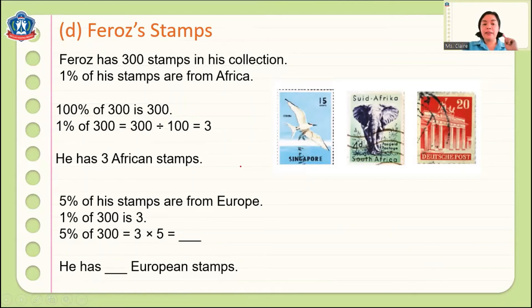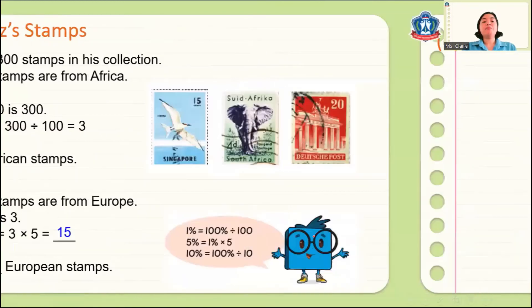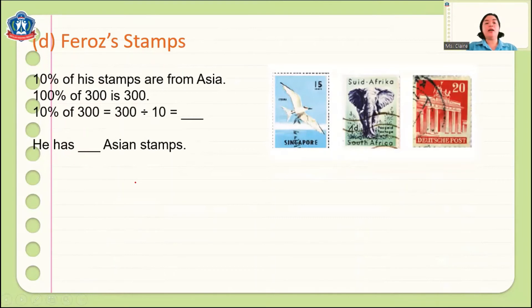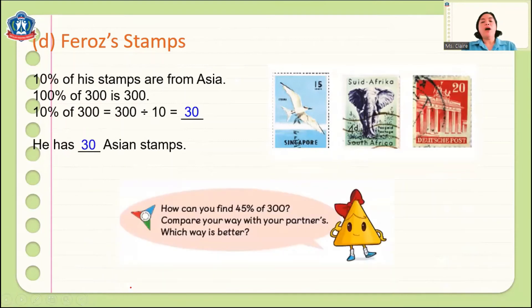Next, let's find the number of Asian stamps. Ten percent of his stamps are from Asia. Since 10% of 300 means we divide 300 by 10, that equals 30. Therefore he has 30 Asian stamps. Now, how can you find 45% of 300? Remember that 1% of 300 is 3, so for 45% we multiply 45 by 3.